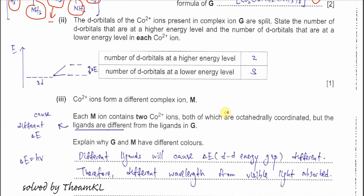Part 2: the d orbitals of the cobalt ions in the complex ion are split. State the number of d orbitals at higher energy level and the number at lower energy level. This is called d-d splitting. When the ligands approach the metal cation, two orbitals — dz² and dx²-y² — experience more repulsion and go to a higher energy level.